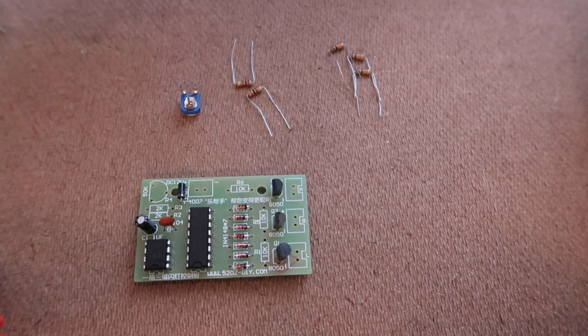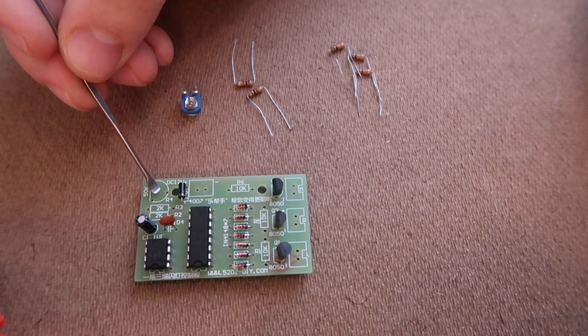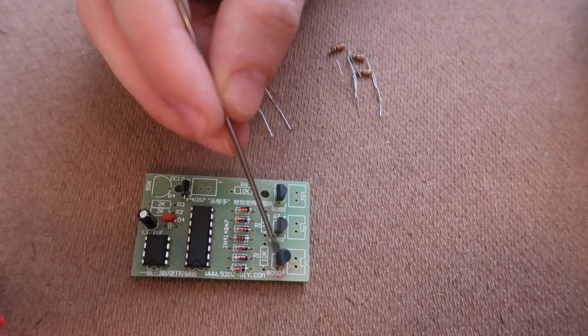Then the resistors, the variable resistor goes in the corner. Below it are the 2Ks and the 10Ks go over here.